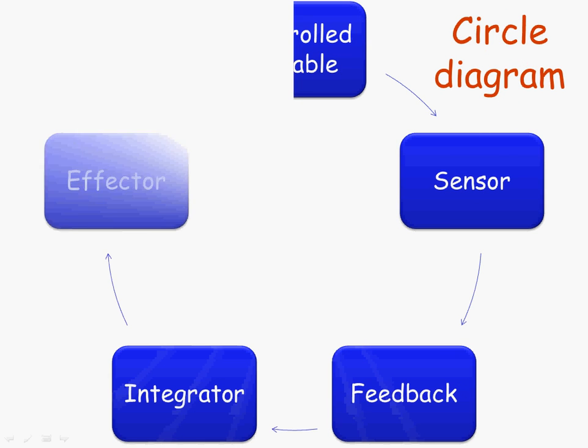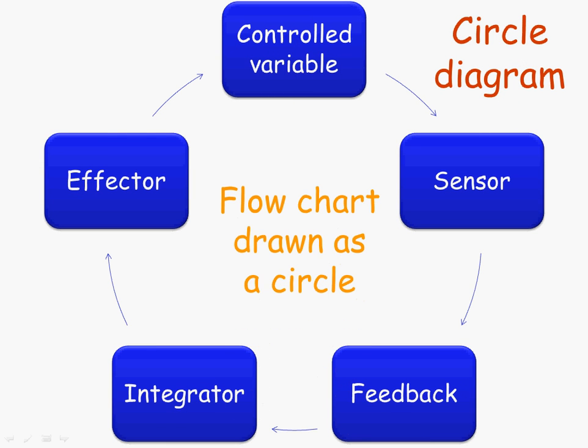Another style of concept map would be a circle diagram. Here's a diagram showing some of the components of a homeostatic feedback loop. We see the controlled variable at the top, and we know that variable is sensed by a sensor, then there's feedback to an integrator which may control an effector, which has an effect on the controlled variable — so the circle is completed. In biology in general, and certainly in human biology, there are a lot of different processes that go in a circle like this.